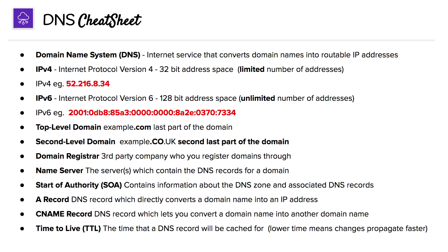Then we talked about top-level domains, and that's just the last part of a domain, like .com. Then you have second-level domains, and this doesn't always happen, but it's usually the second-last part of the domain — so in .co.uk, it's going to be the .co.